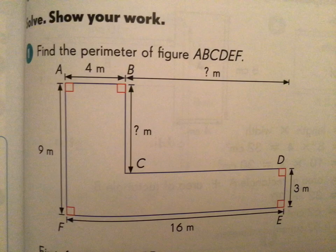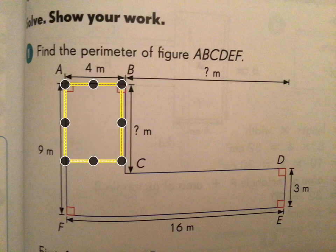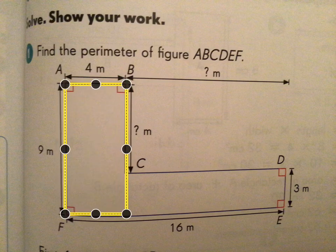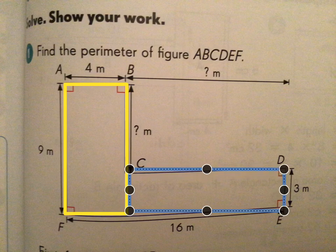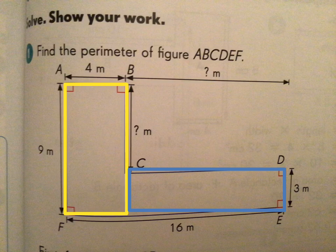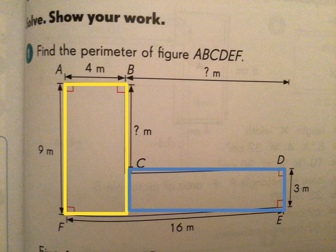Let's look at another one. This composite figure looks like it's made up of two rectangles. It's sometimes helpful to know that — you know four right angles, opposite sides of equal length. We can use those properties of rectangles to help us find missing side lengths.